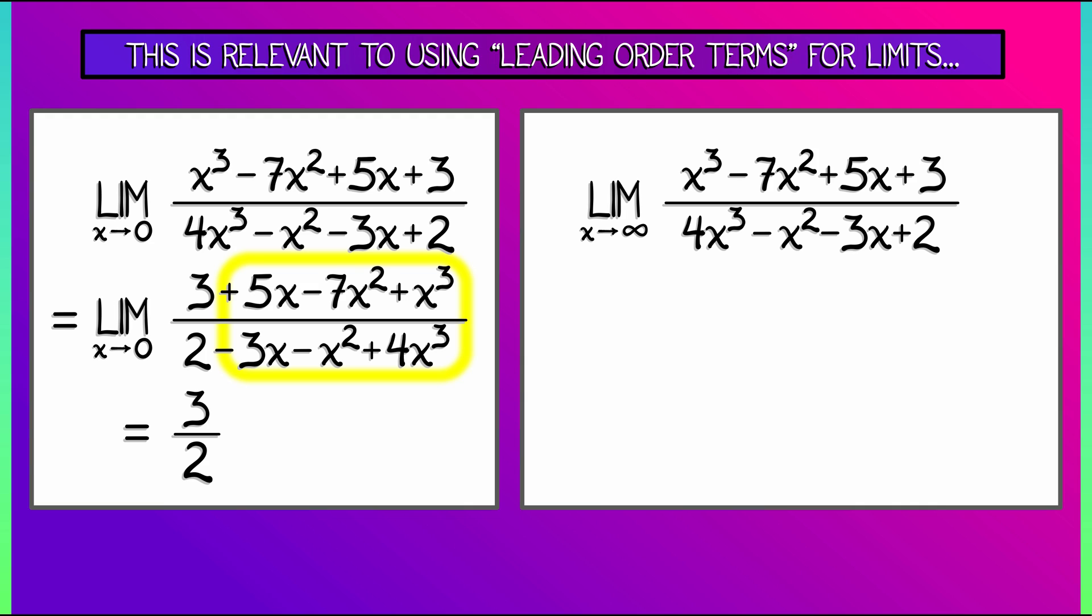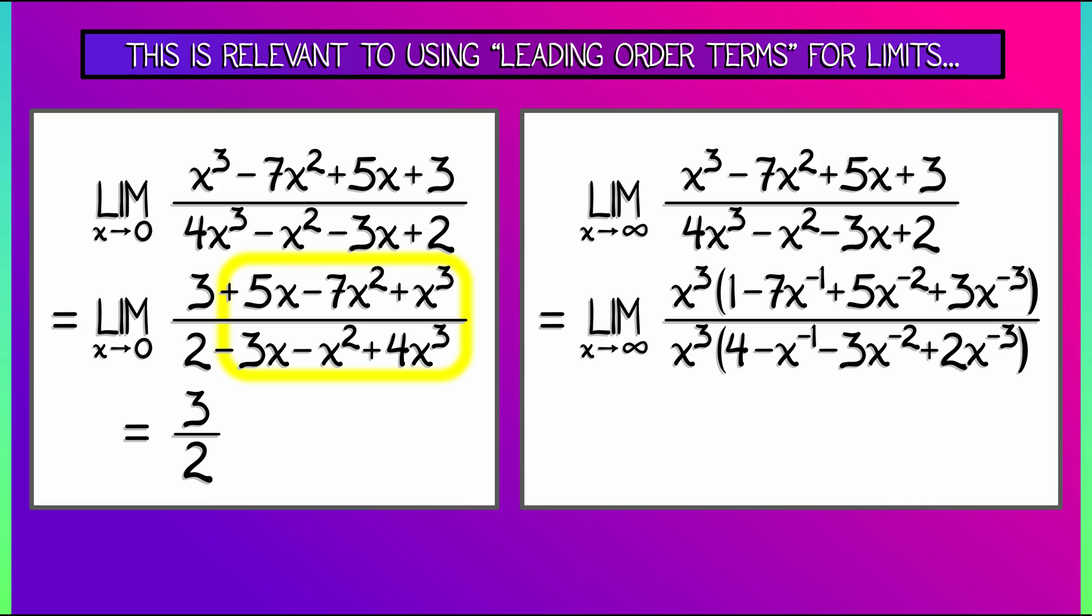Now, the leading order terms are the cubic terms. And if we factor out an x cubed from the numerator, from the denominator, then what is left over is up top something of the form 1 minus 7 over x plus 5 over x squared plus 3 over x cubed. And then down below, 4 minus 1 over x minus 3 over x squared plus 2 over x cubed. All of those higher order terms are going to zero more and more rapidly as x goes to infinity.